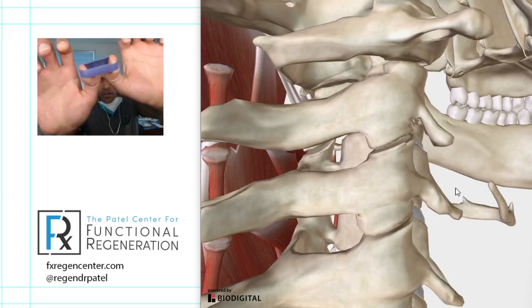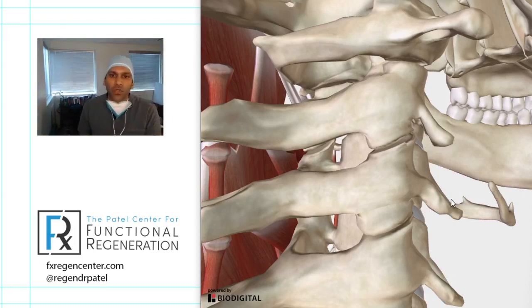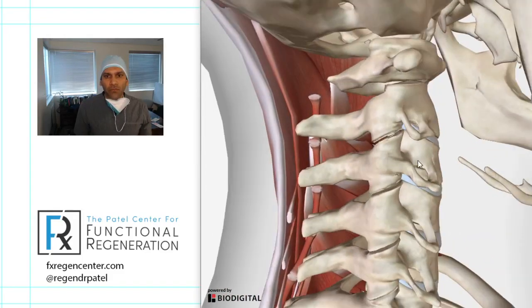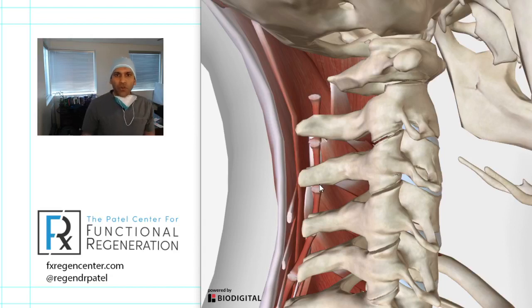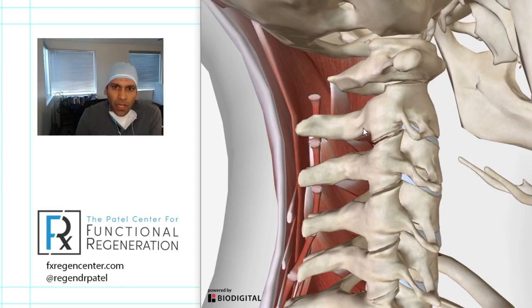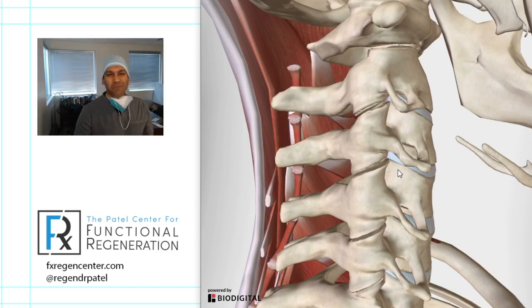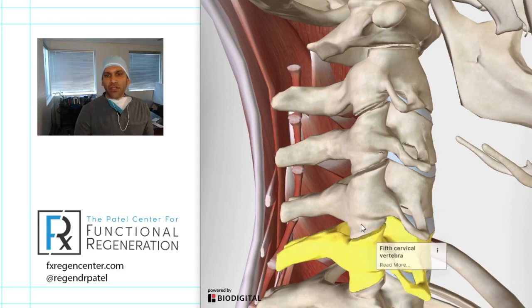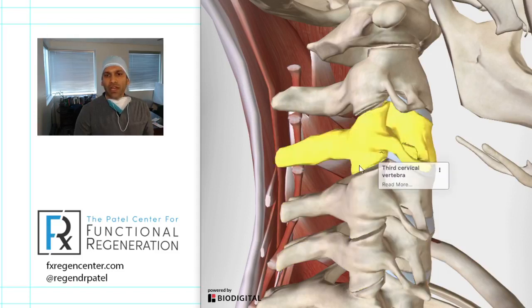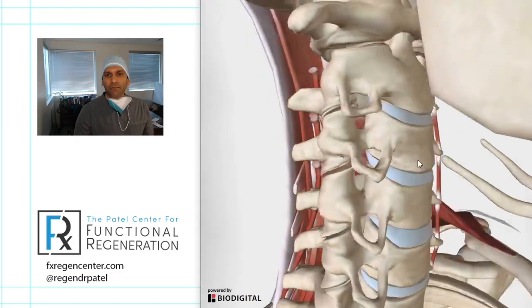That capsule allows those bones to stay approximated, and there's a little bit of motion that takes place at those capsules because those ligaments are the consistency of thick rubber bands — strong and supportive but with a little bit of stretch. The spinous processes are the nubbins we feel when we press the back of our neck in the midline. You can picture the vertebral body like a coffee mug, with the front being the mug and the back being the handle — where the handles touch, those are the facet joints.